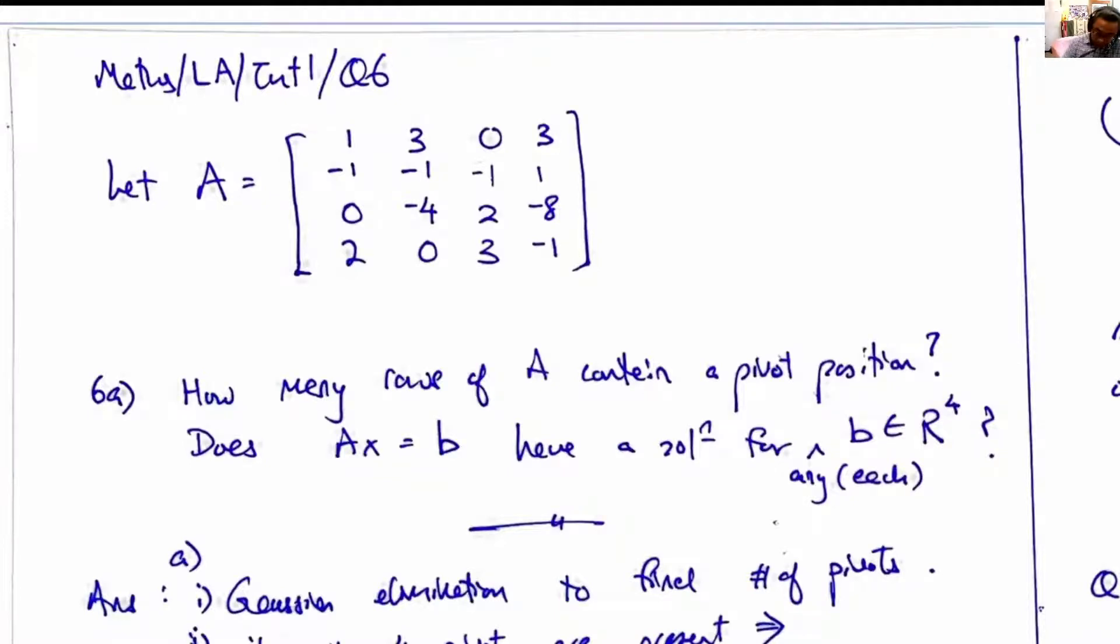This is Tutorial 1, Question 6. Here we are given a matrix A which is 4 by 4, and we are asked to perform Gaussian elimination. We're asked how many rows contain pivots after that.